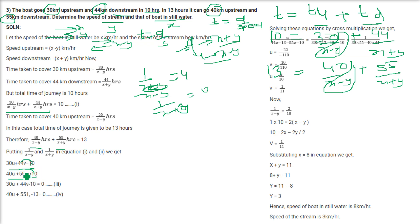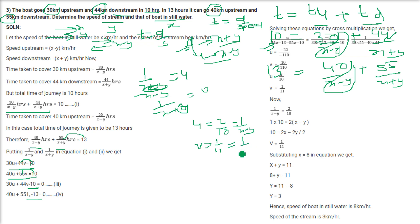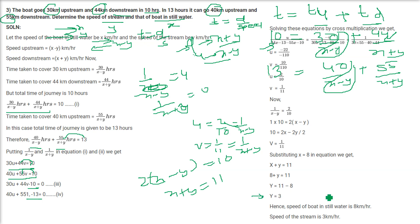Using U equals 1/5: 1 by (X minus Y) equals 1/5, so X minus Y equals 5. Using V equals 1/11: X plus Y equals 11. Solving these two equations: adding gives 2X equals 16, X equals 8, and Y equals 3. So the speed of the boat in still water is 8 km/hr and the speed of the stream is 3 km/hr.